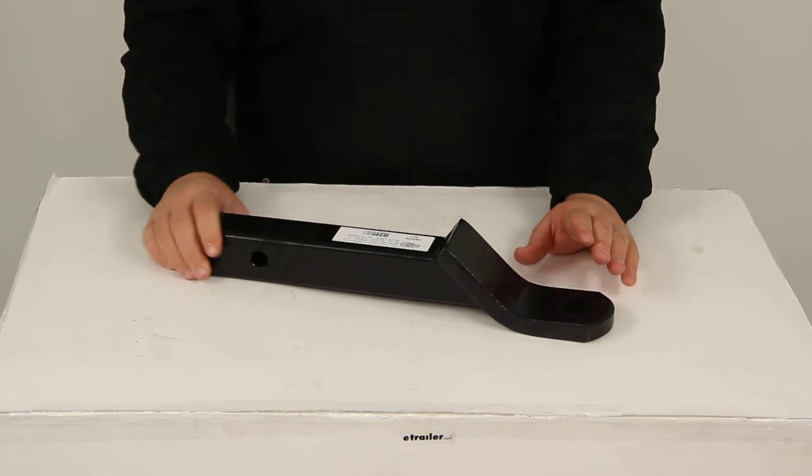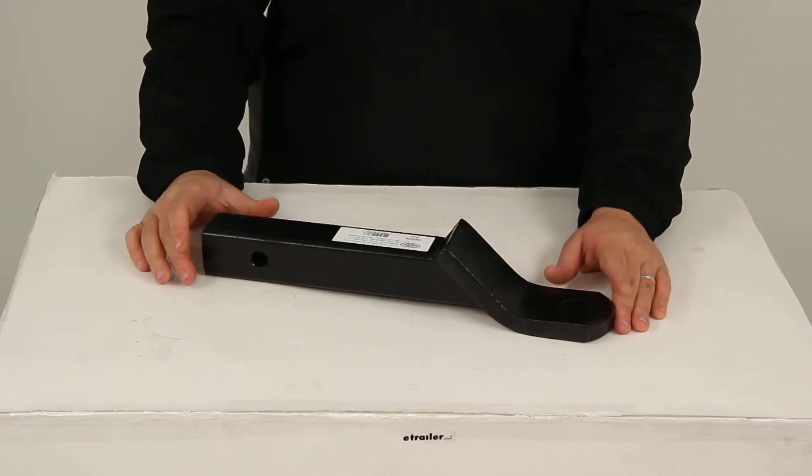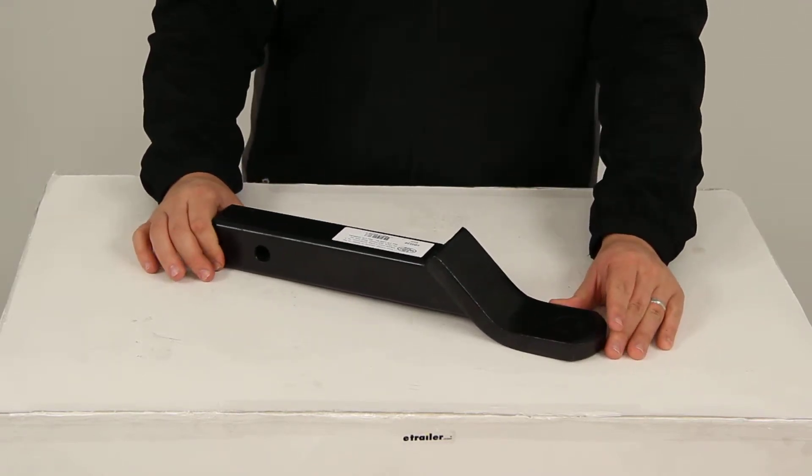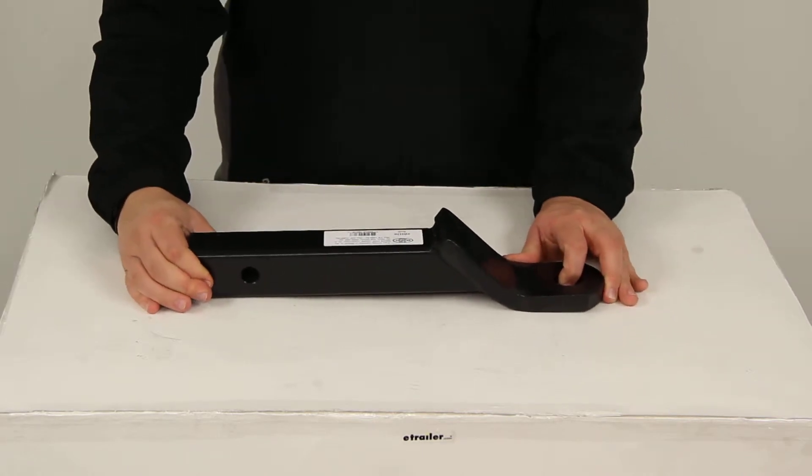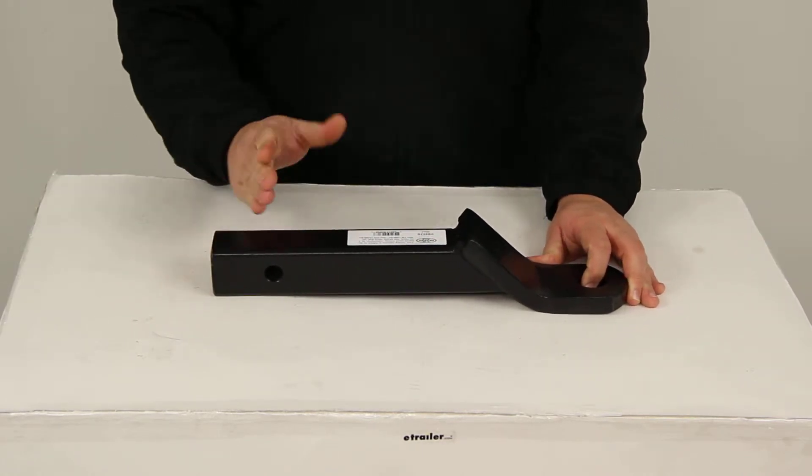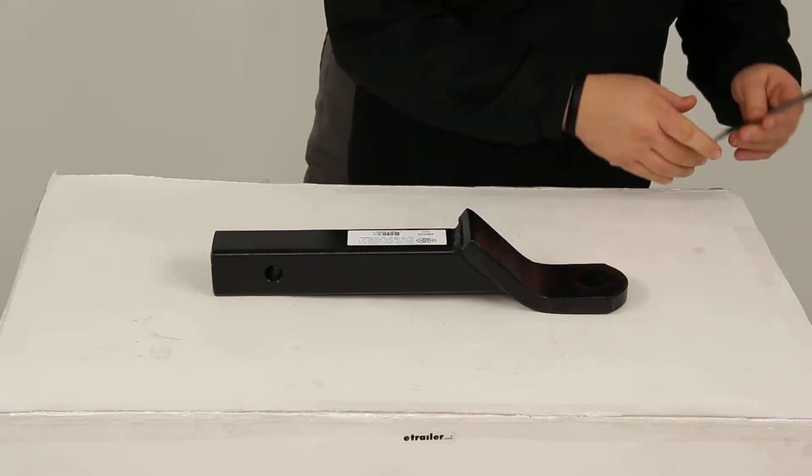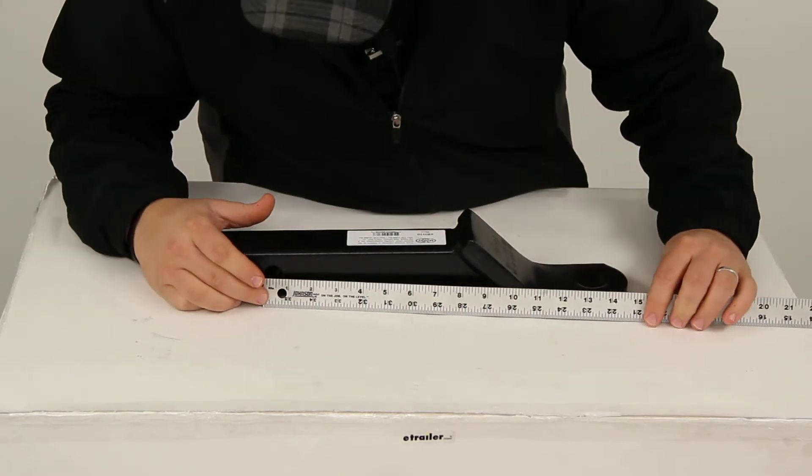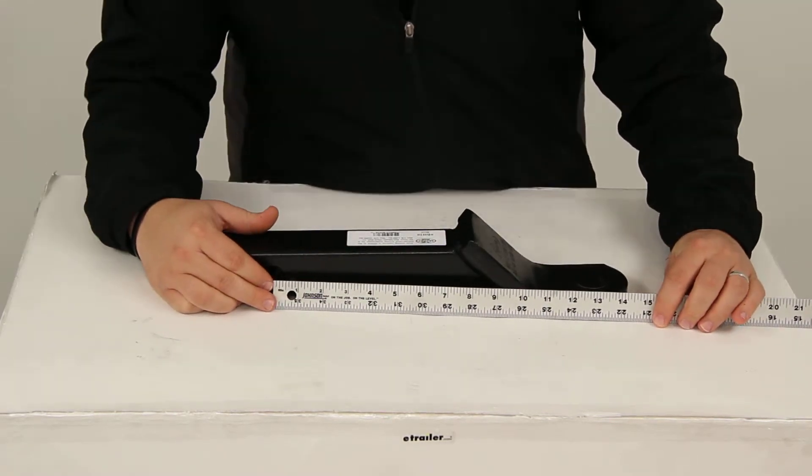The finish on it will help it stand up against rust and corrosion. It is a nice black powder coat finish. The distance from the center of our hitch pin hole to the center of our ball hole is going to measure right at 13 and one quarter of an inch.